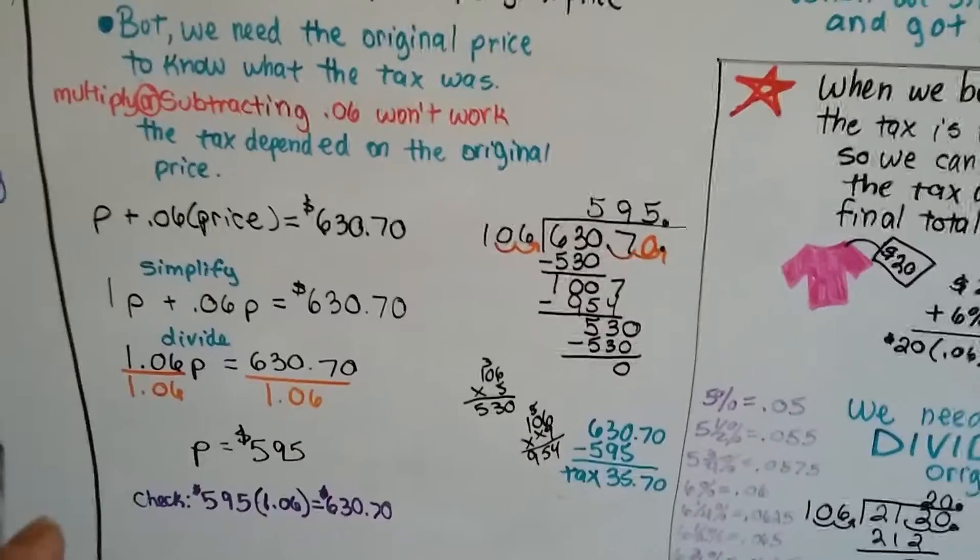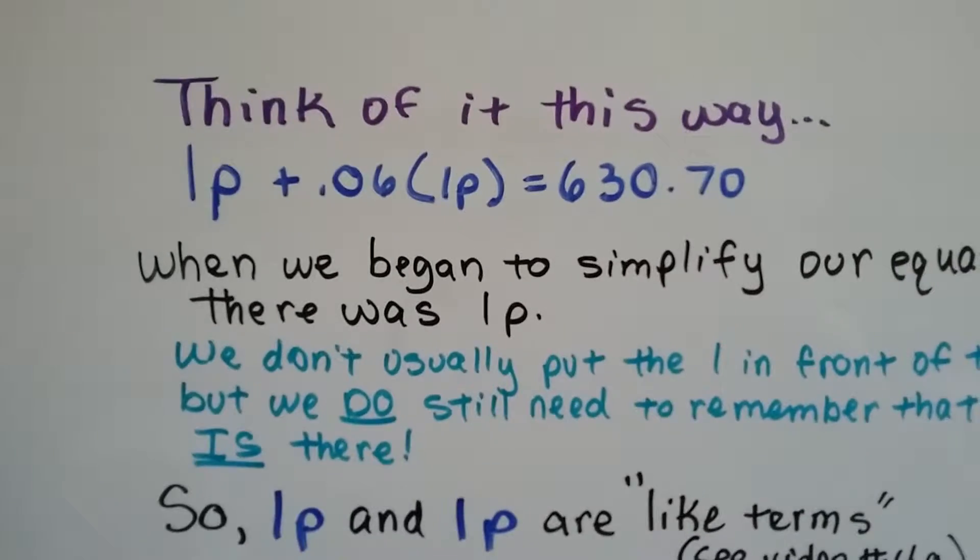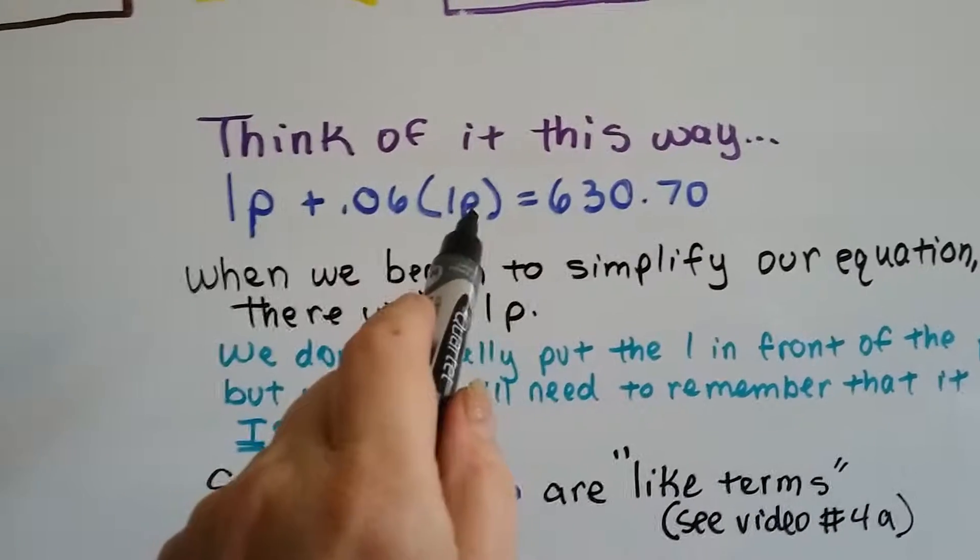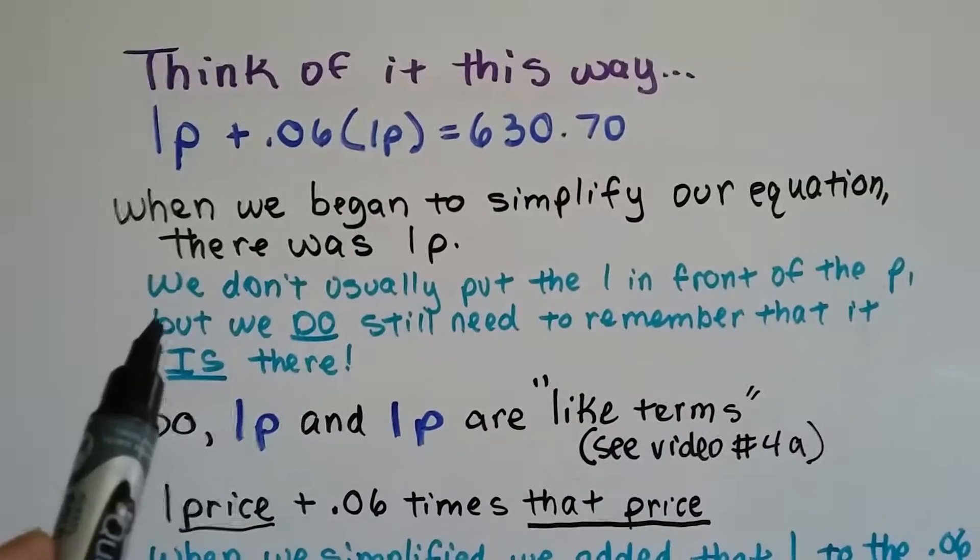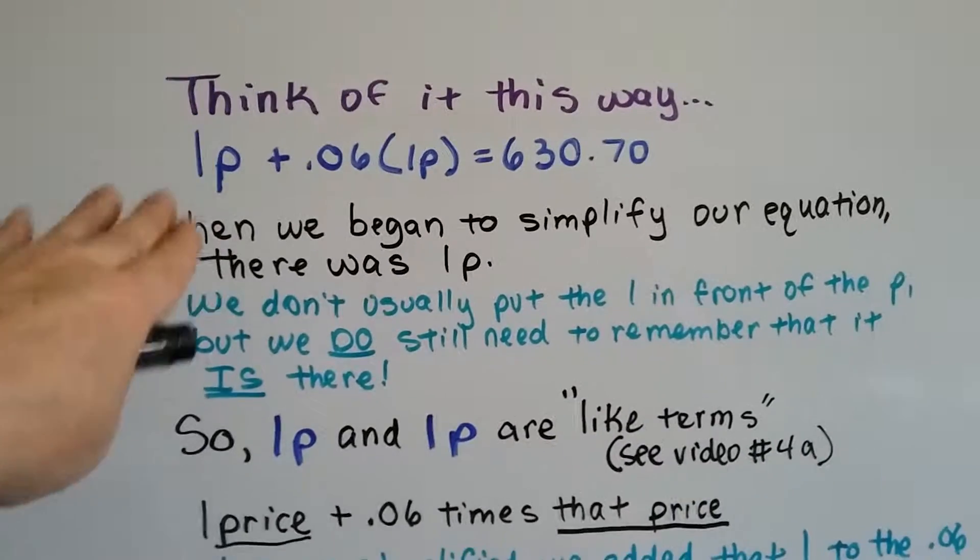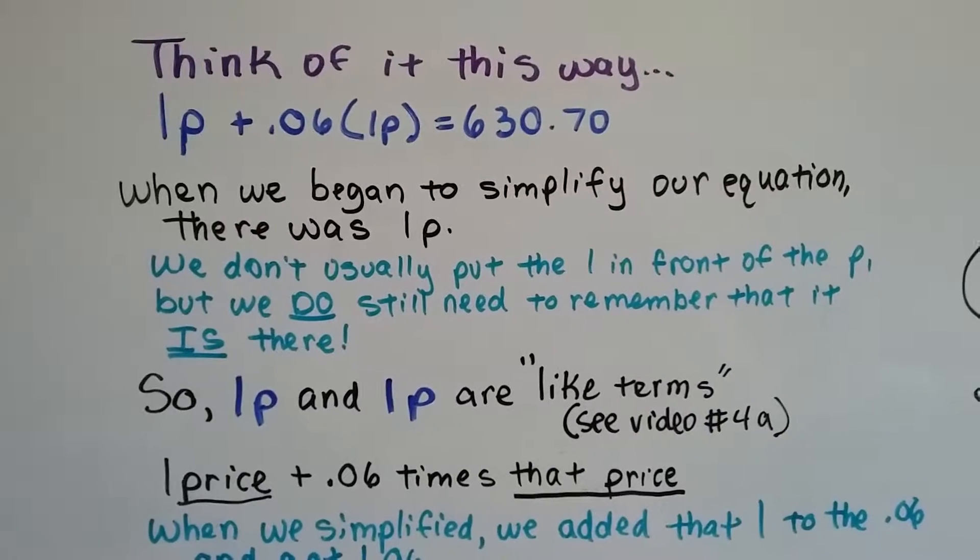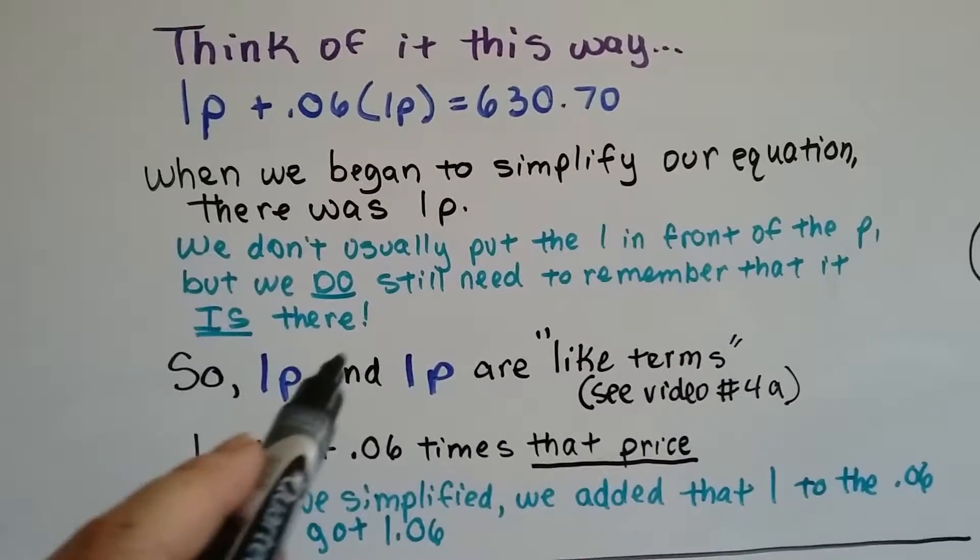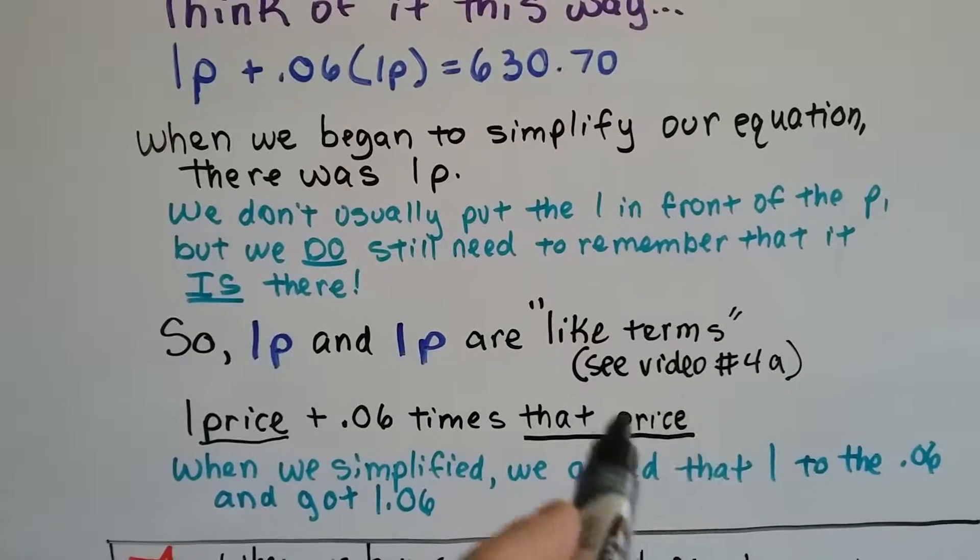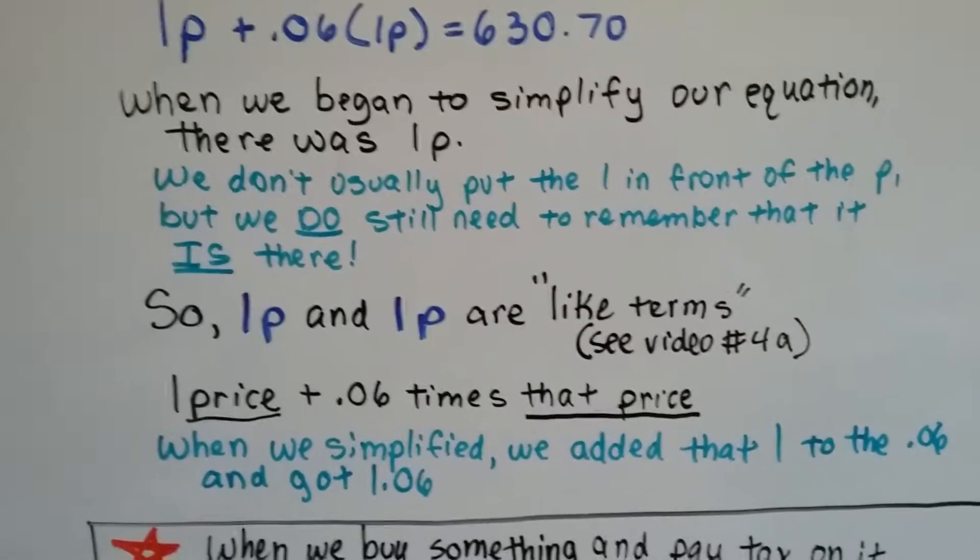Now if you're still confused and you have no idea what I'm talking about, let me keep explaining. Just think of it this way. The 1P plus 0.06 is really multiplied by another 1P. When we began to simplify our equation, there was 1P. It was just written as a P, but it was really 1P and we don't usually put the 1 in front of the variable. But we do still need to remember that it is there. So 1P and 1P are like terms. If you don't remember how to do like terms, you can go back to my video number 4a. I explained combining like terms in that video and it might really help you.